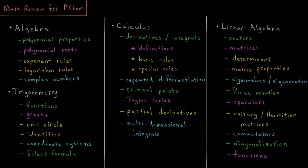Also quite useful is Euler's formula, which relates sines and cosines to complex exponentials — something that comes in handy quite a few times.